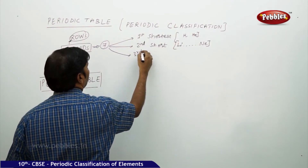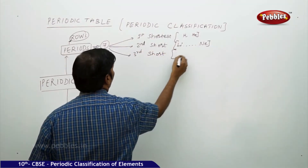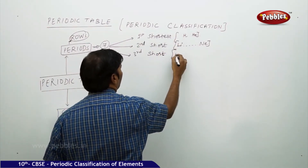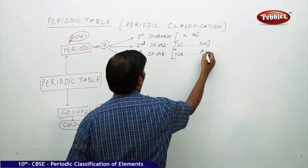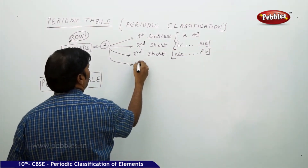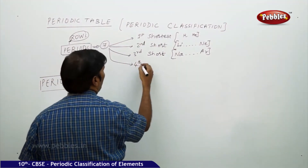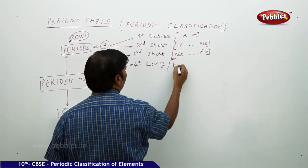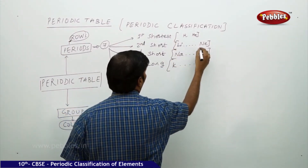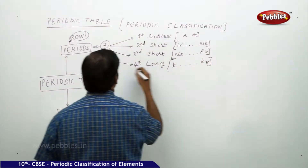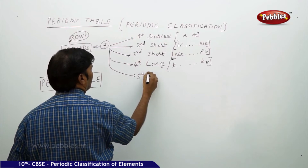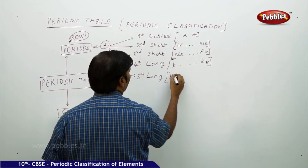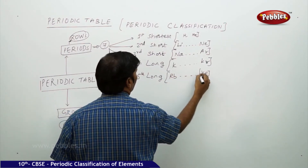The third period is again a short period, starting with sodium and ending with argon. The fourth is a long period, starting with potassium and ending with krypton. The fifth is also a long period, starting with rubidium and ending with xenon.